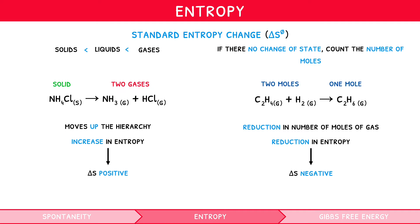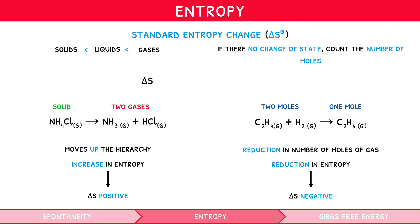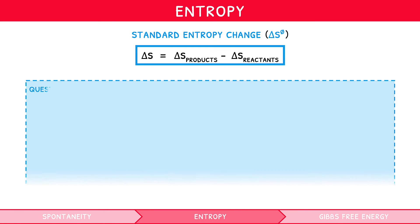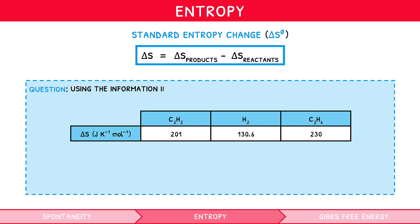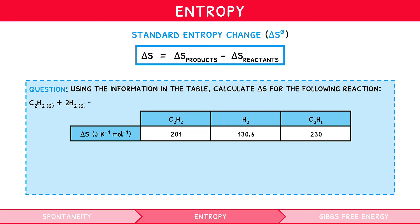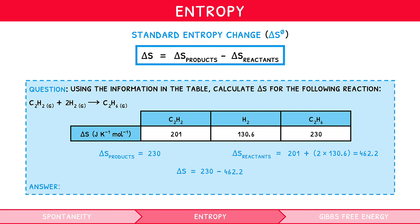However, for your IB Chemistry higher level exam, you can sometimes be asked to use values to calculate entropy change. To do so, we use the standard formula. For the example question — using information in the table, calculate delta S for the following reaction — the total entropy of the products is C2H6, which gives 230. The total entropy of the reactants is C2H2 plus 2 times H2, which gives 462.2. Thus, products subtract reactants gives negative 232.2 joules per kelvin per mole.